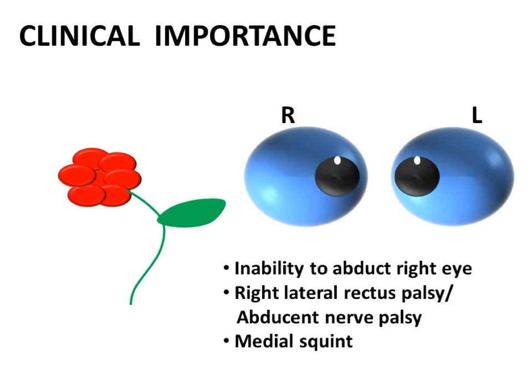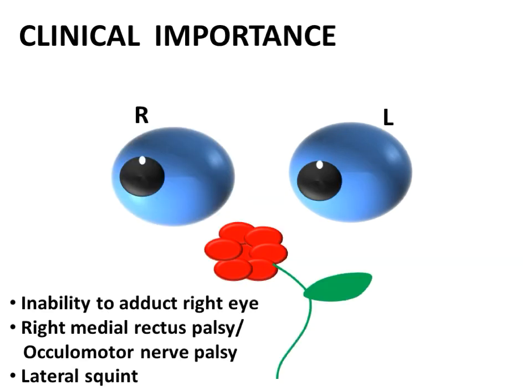A lesion in the abducent nerve results in lateral rectus palsy and medial squint. A lesion in the oculomotor nerve results in medial rectus palsy and lateral squint. These will be dealt with in detail in further clinical sessions.